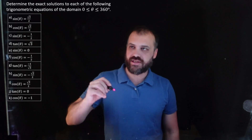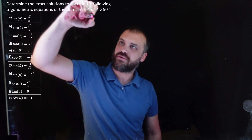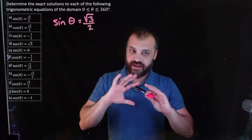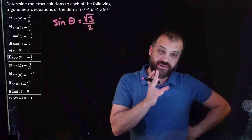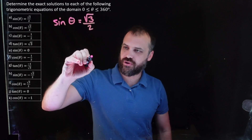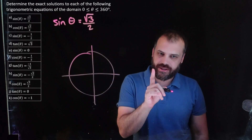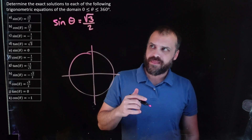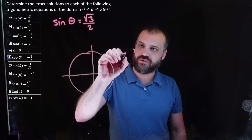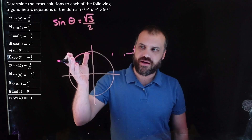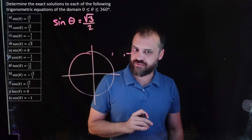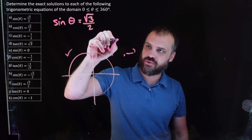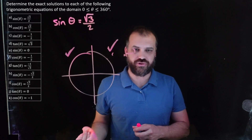Alright, let's take a look: sine θ = √3/2. How are we going to approach this? I'm going to draw a circle. Notice that sine θ equals a positive value — root 3 on 2 is positive. Sine is the y-coordinate of a dot. So where in our circle is the y-coordinate positive? The y-coordinate is positive in quadrant one and in quadrant two, so we're going to have an answer in quadrant one and an answer in quadrant two.